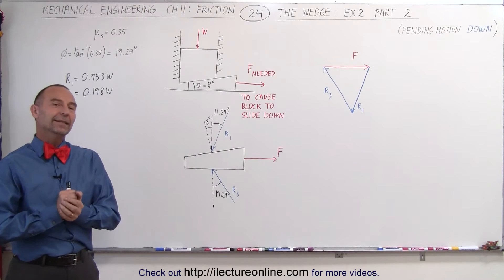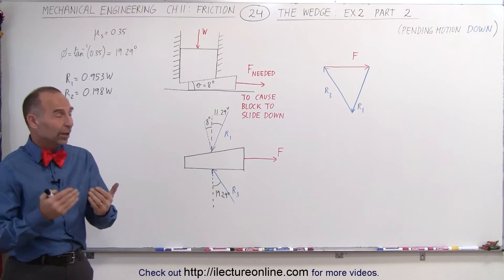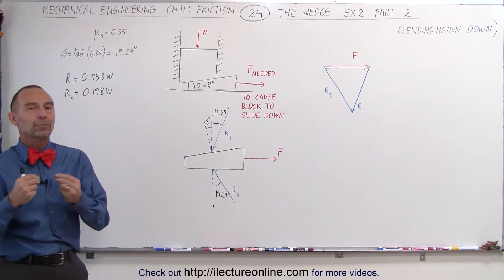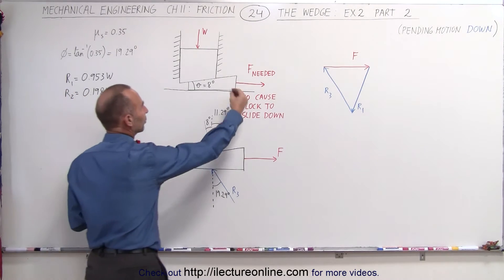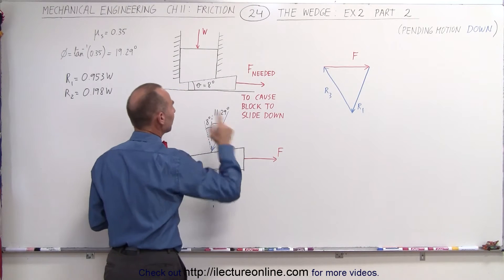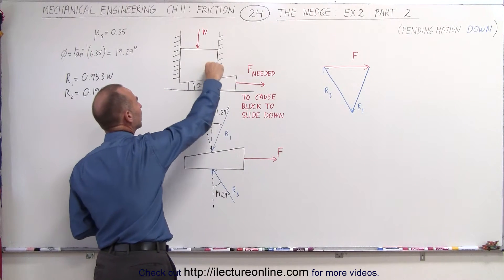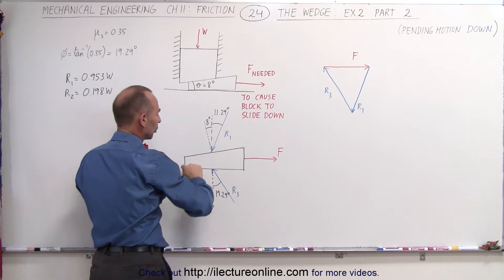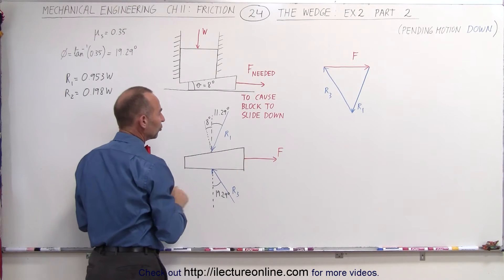Welcome to ElectronLine. Now that we've finished part one in the previous video, we're now ready to do part two. We're trying to find the force required to pull the wedge out. In the previous video, we looked at the forces acting on the block. Now we're going to look at the forces acting on the wedge.